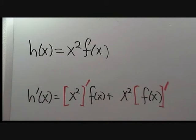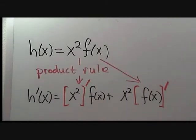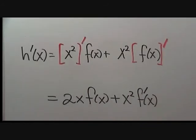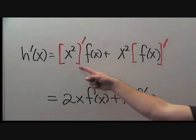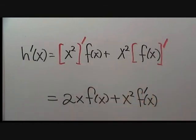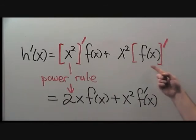Because h of x equals x squared times f of x, we need to use the product rule. The derivative of h will be the derivative of the first term times the second plus the first term times the derivative of the second. The derivatives are easy to evaluate. The derivative of the first term is simply the power rule. The derivative of the second term is simply the definition of the derivative. The derivative of f is f prime.